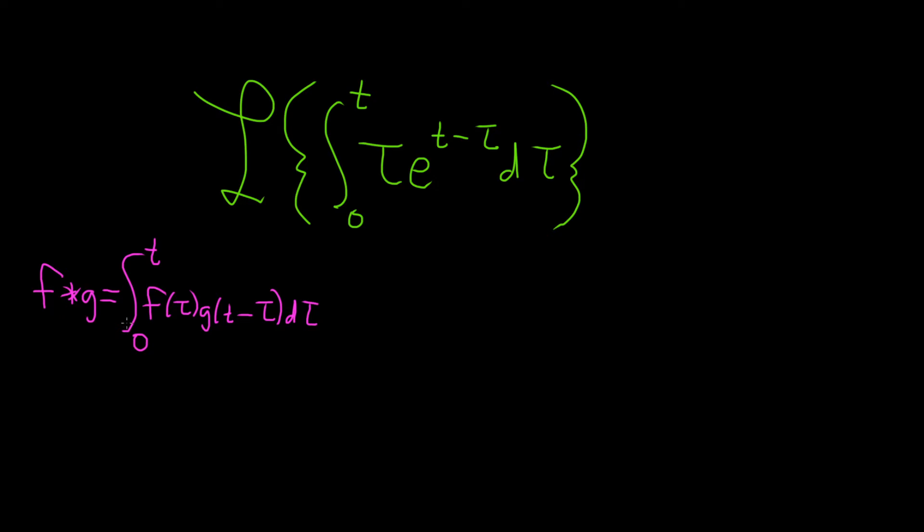And so the nice thing about this, the nice thing about being able to take this and make it look like this, is that if you have the Laplace transform of a convolution, then that's just the Laplace transform of f times the Laplace transform of g. And yes, I said times, just regular multiplication. You can actually do that. So it's really powerful. So let's go ahead and identify our f and g in this problem and then use this. This is called the convolution theorem.